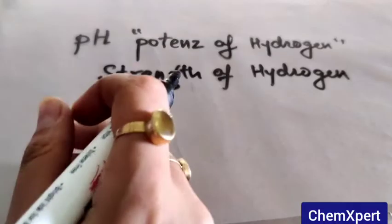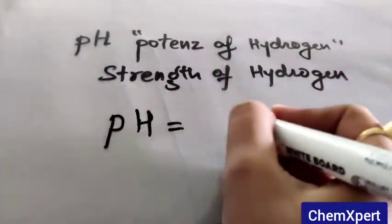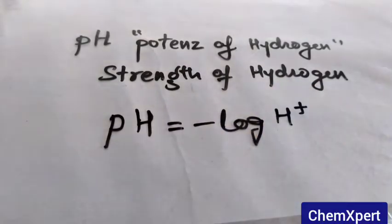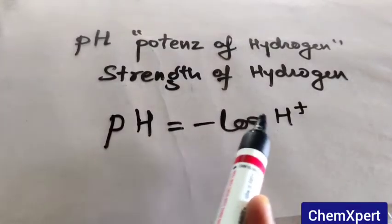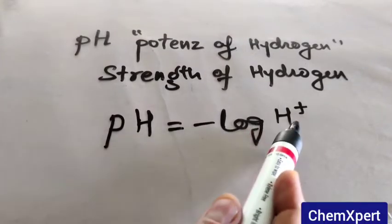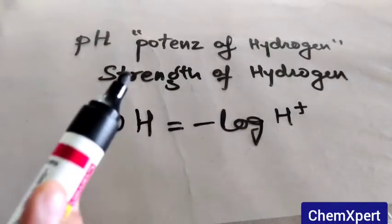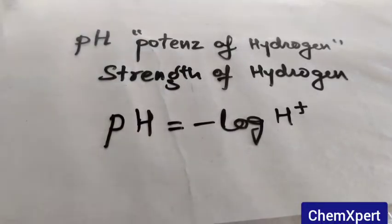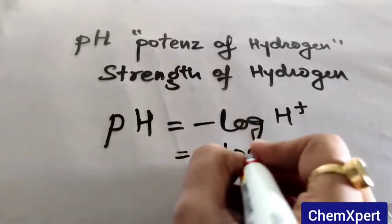In mathematical terms, pH is equal to minus log of H+ ion. That is, it is negative of logarithm of base 10 of hydrogen ion concentration in mole per liter. So generally it stands for the strength of hydrogen.